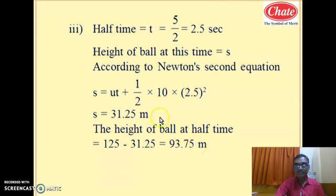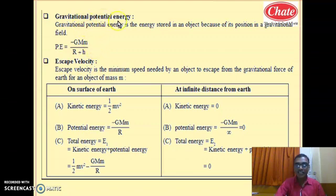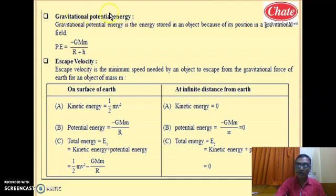Now the next topic in gravitation as per your syllabus is gravitational potential energy. It is one sort of energy. You are familiar with the word potential energy, and here is a new concept — gravitational potential energy. You have studied in earlier class that potential energy is mgh, and with that same concept, what happens to the equation of mgh?